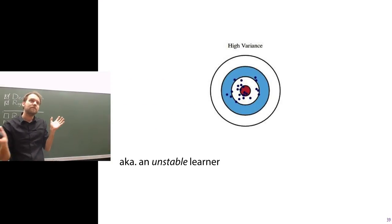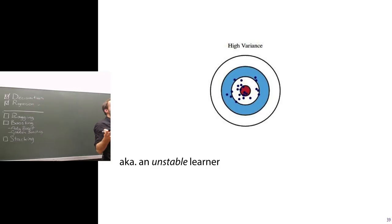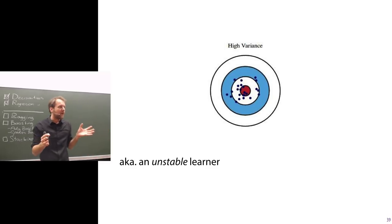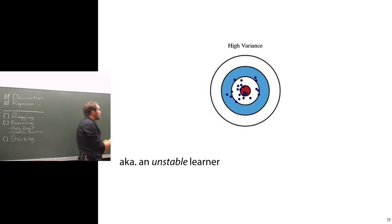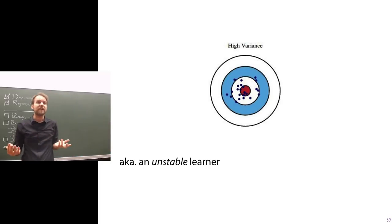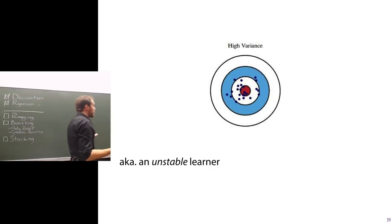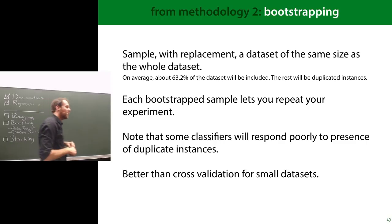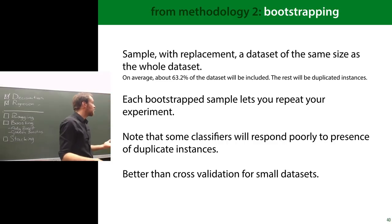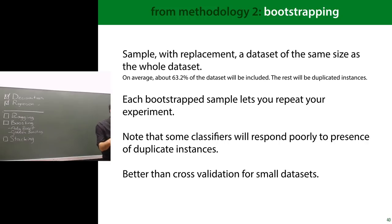You can visualize bias and variance with a dartboard analogy: high bias is when all darts cluster away from the target; high variance is when darts are spread out. But you only have one data set and train one model, so you only get one dart and can't distinguish systemic error from high variance. To figure it out, we use a method called bootstrapping.